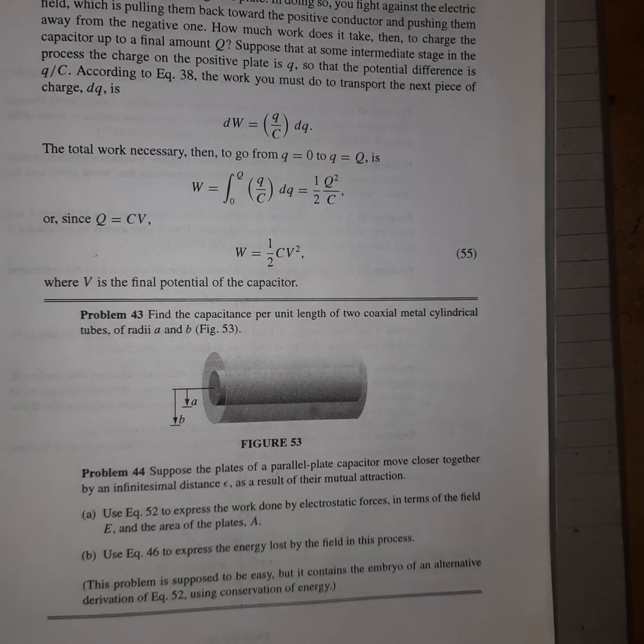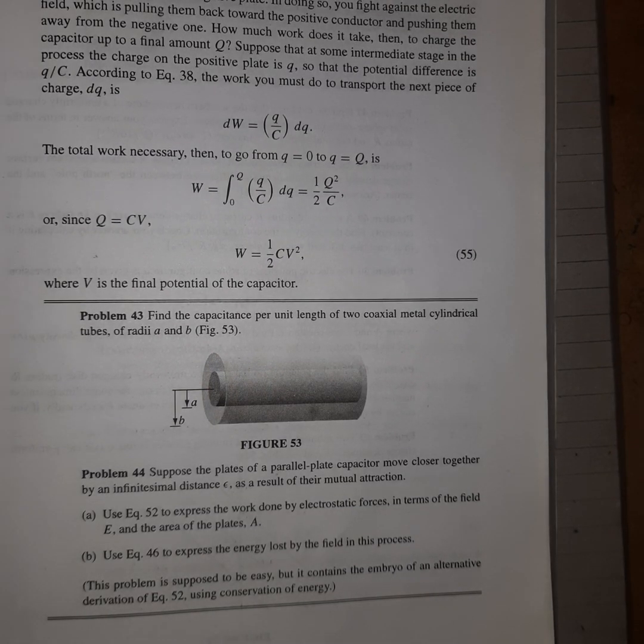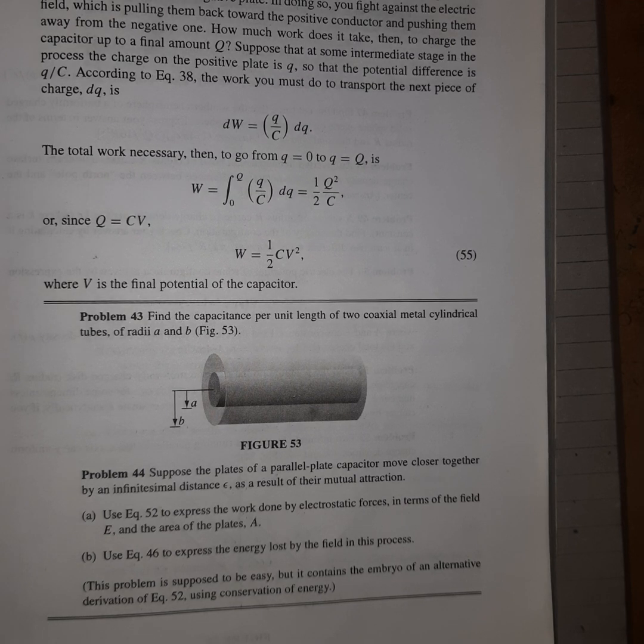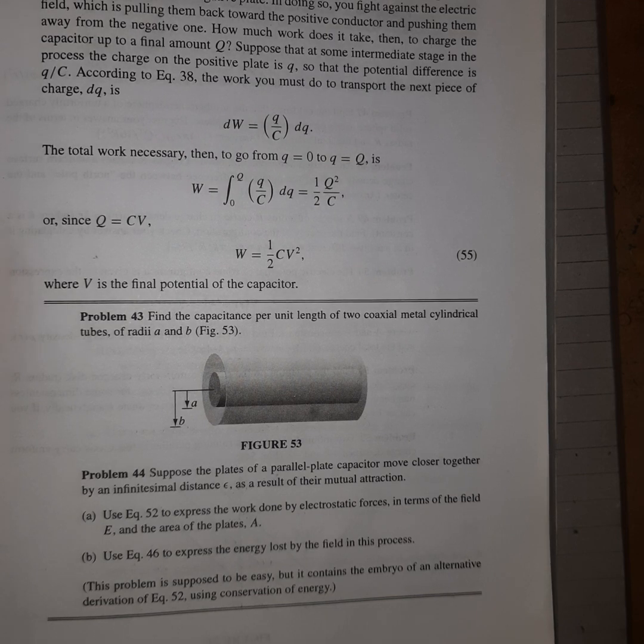Welcome back everyone. Now let us start Problem number 43, which says find the capacitance per unit length of two coaxial metal cylindrical tubes of radii a and b in Figure number 53.